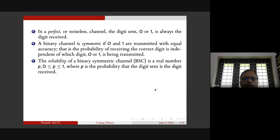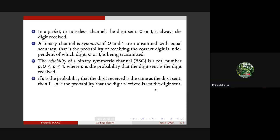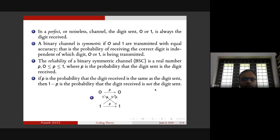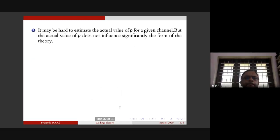The reliability of a binary symmetric channel (BSC) is a real number P which lies between zero and one, where P is the probability that the digit sent is the digit received. If you send zero, the probability of receiving zero is P, and the probability of receiving one is 1-P. Similarly, if you send one, the probability of receiving one is P, and the probability of receiving zero is 1-P.